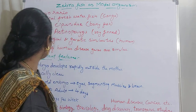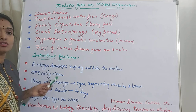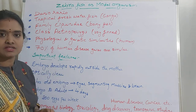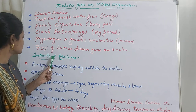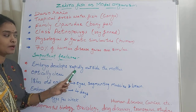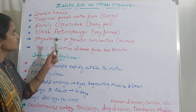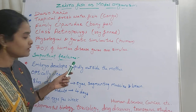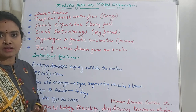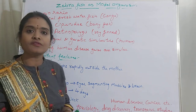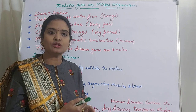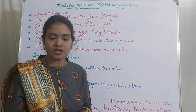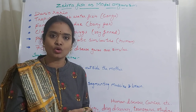Apart from these characteristics, zebrafish also have certain salient features that make them useful as a model organism in molecular biology. First, embryo development is rapid and occurs outside the mother. These freshwater fish lay many eggs, producing many embryos at a time, which are then used in drug testing.